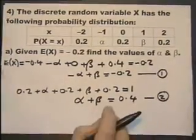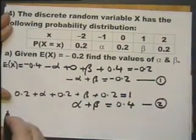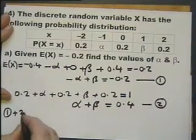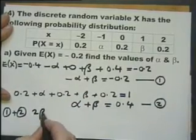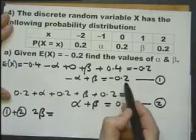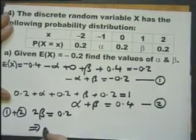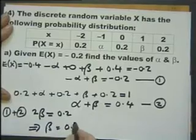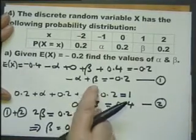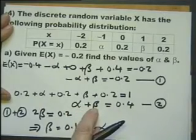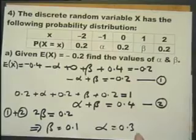If we add the two equations together, the alphas cancel, and we get 2 beta equals 0.2, so beta equals 0.1. Alpha can be found by substituting beta back into either equation — using the simpler one, putting in 0.1 gives alpha equals 0.3. So that's part A done.